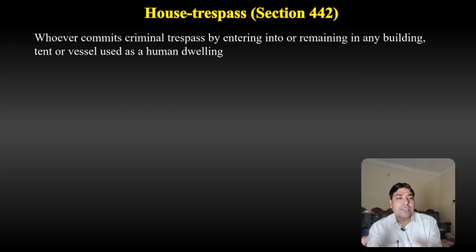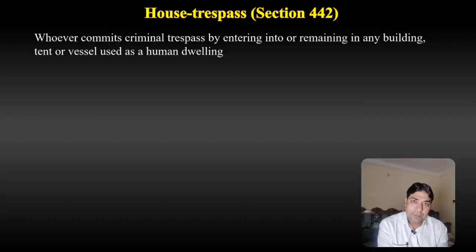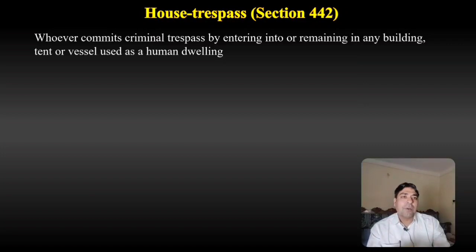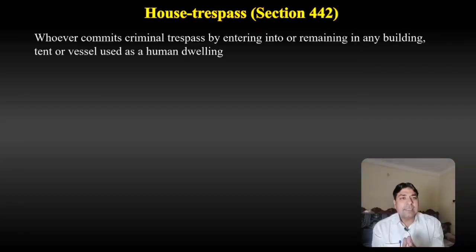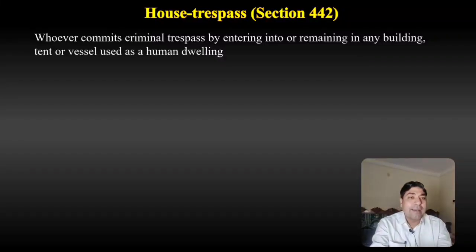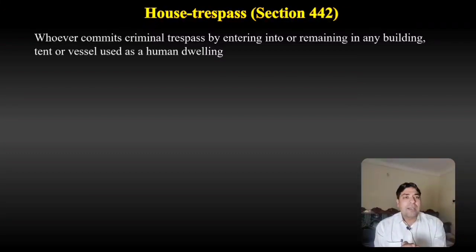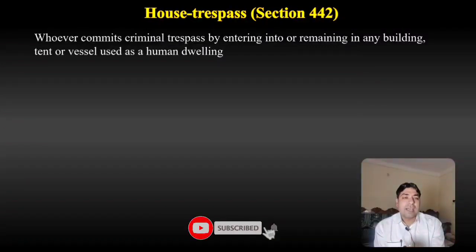अगर कोई person criminal trespass करता है — कहां पर? By entering into or remaining in any building, tent, or vessel used as a human dwelling. ऐसी building जहां पर लोग रहते हैं, ऐसा tent जहां पर लोग रहते हैं, या ऐसा vessel या ship जहां पर लोग रहते हैं। Criminal trespass हमने पिछले lecture में Section 441 के तहत discuss की — अगर आपको समझना हो तो YouTube channel से देख सकते हैं।